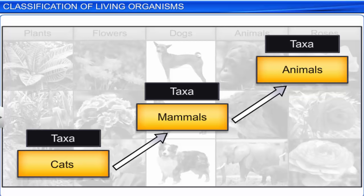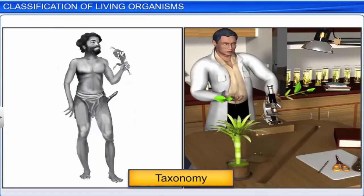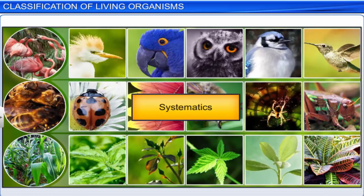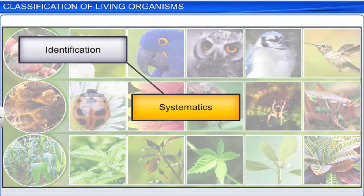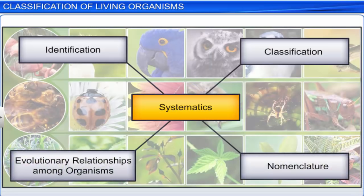This process of classifying living organisms into different taxa, based on their characteristics, is called taxonomy. Taxonomy isn't new to humans. For ages, humans have been interested in knowing about different types of organisms and the relationships among them. This branch of study is known as systematics, which means systematic arrangement of organisms. However, today, systematics also includes identification, classification, nomenclature, as well as evolutionary relationships among organisms.